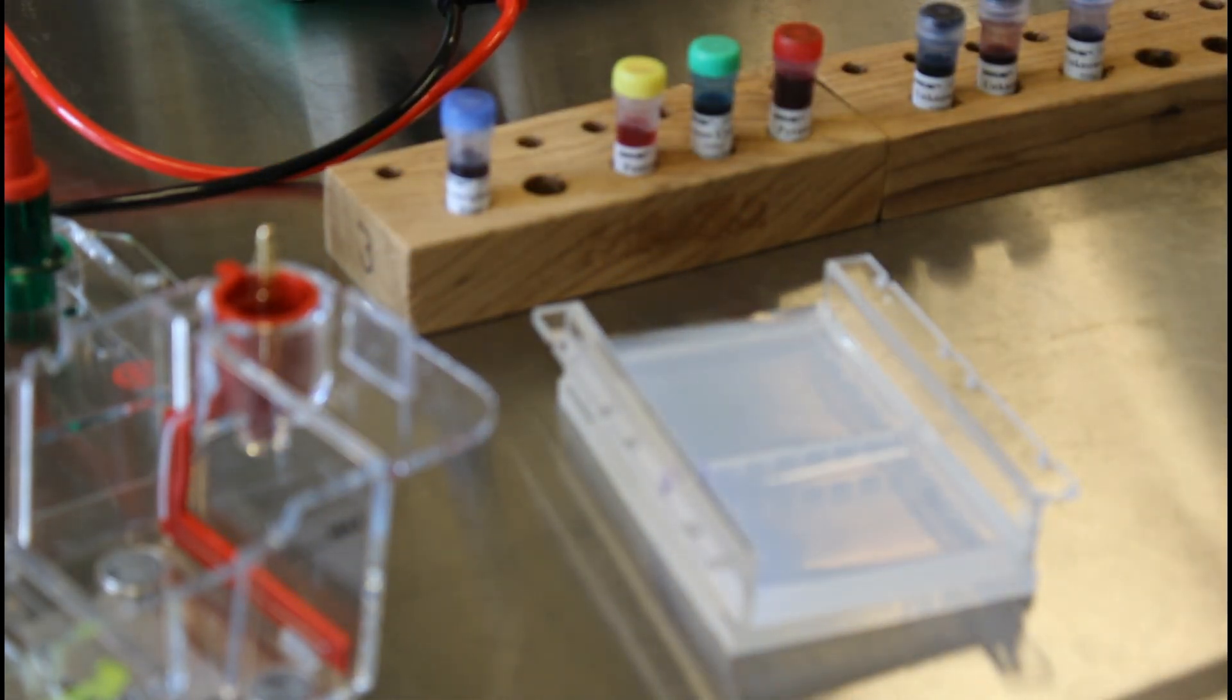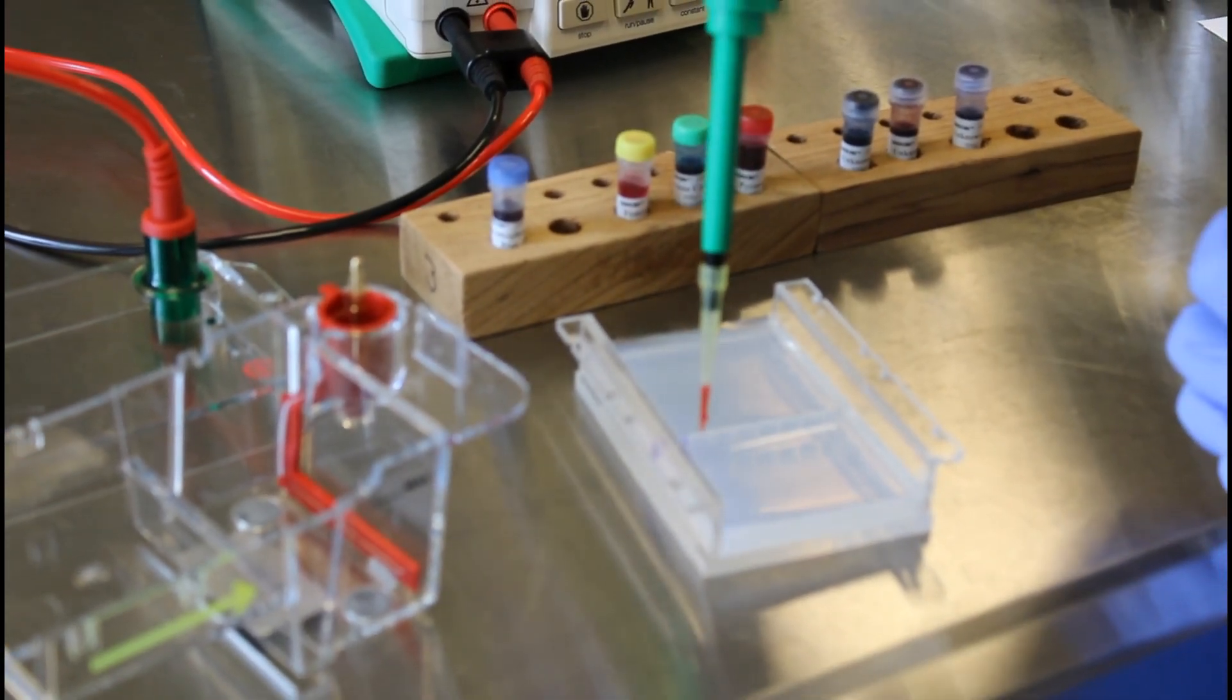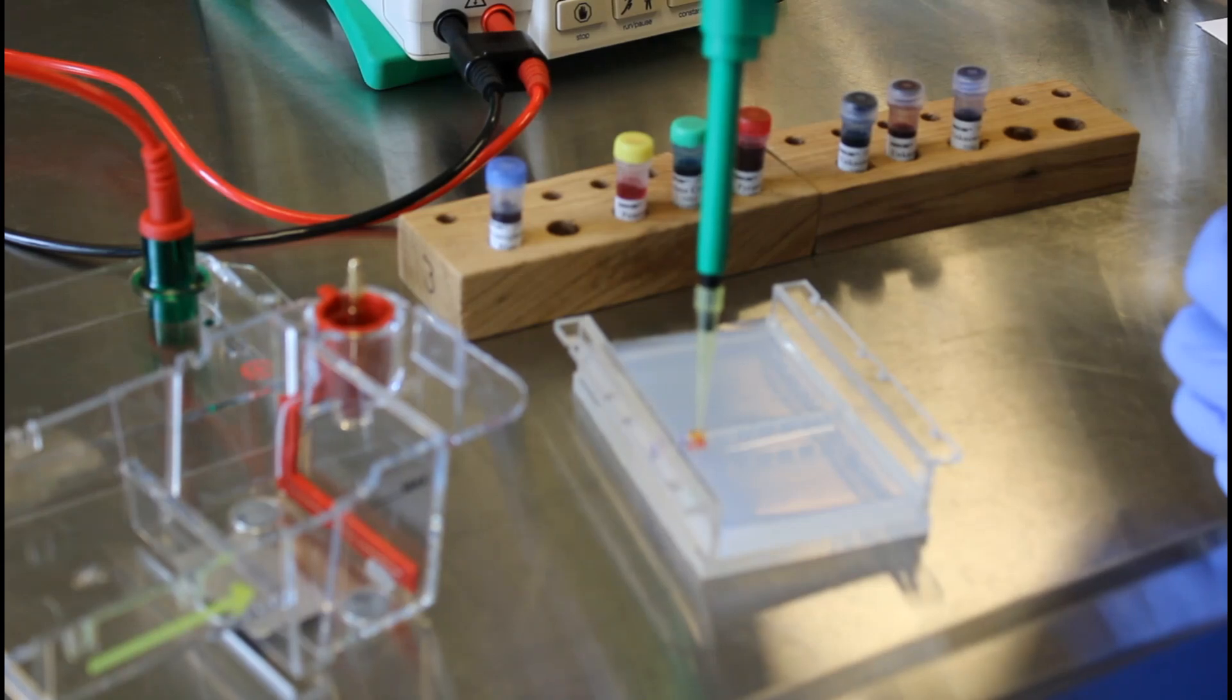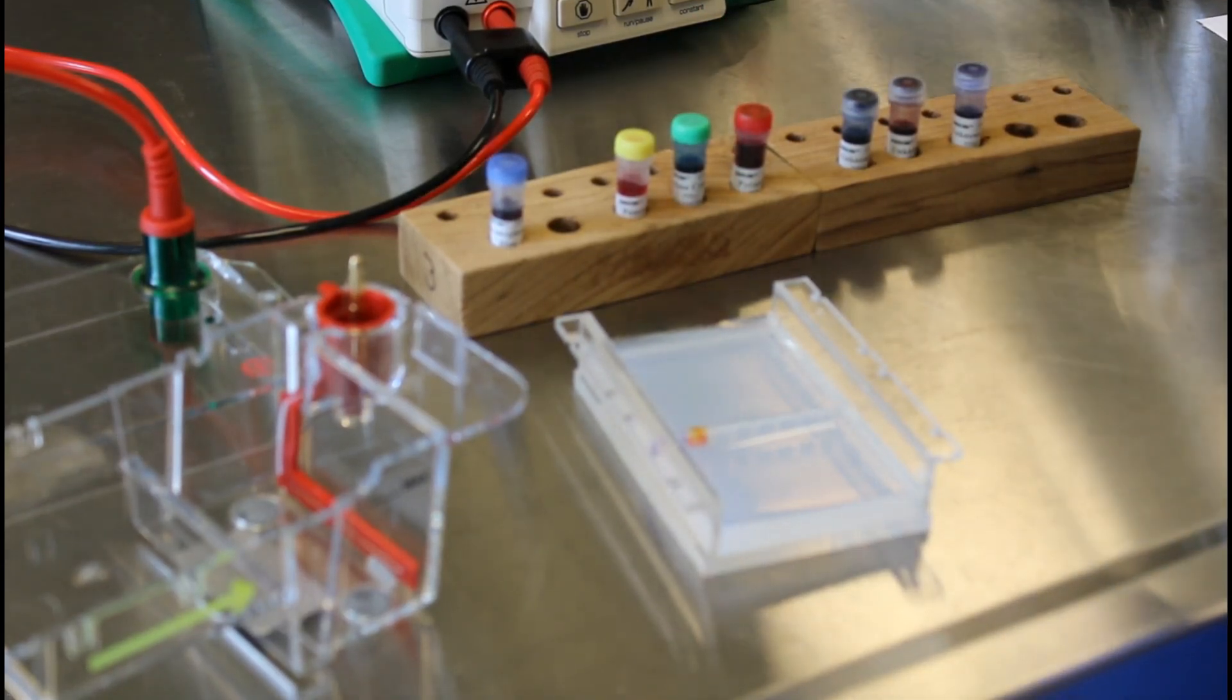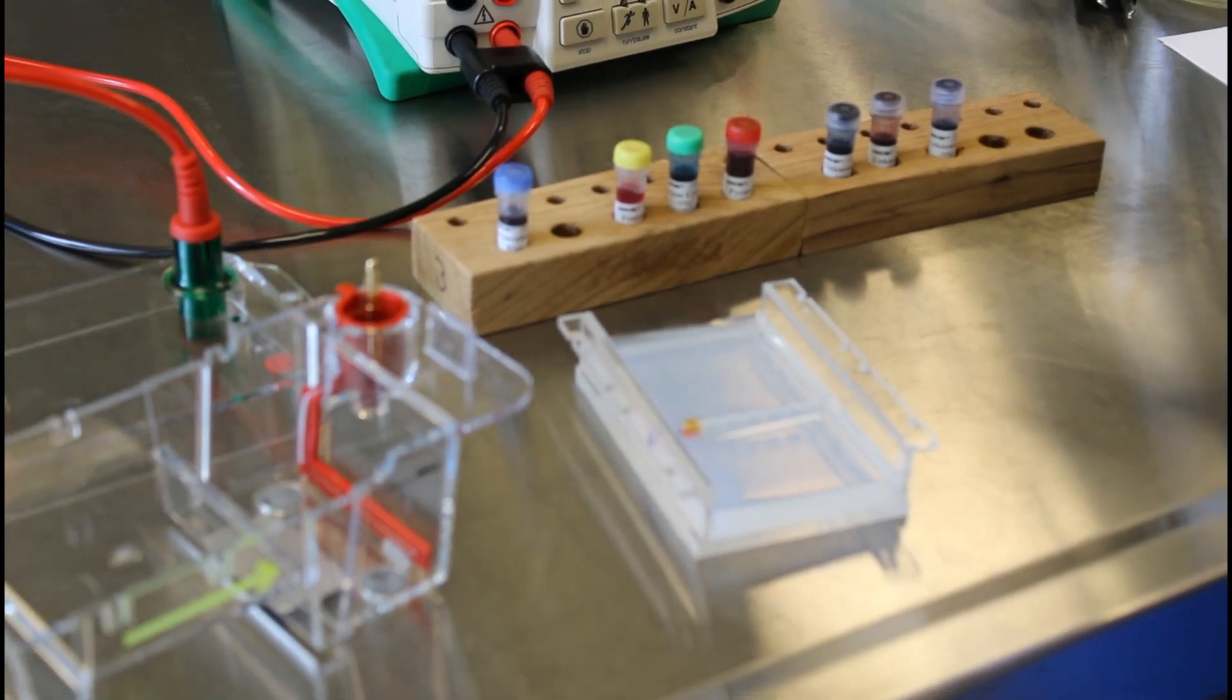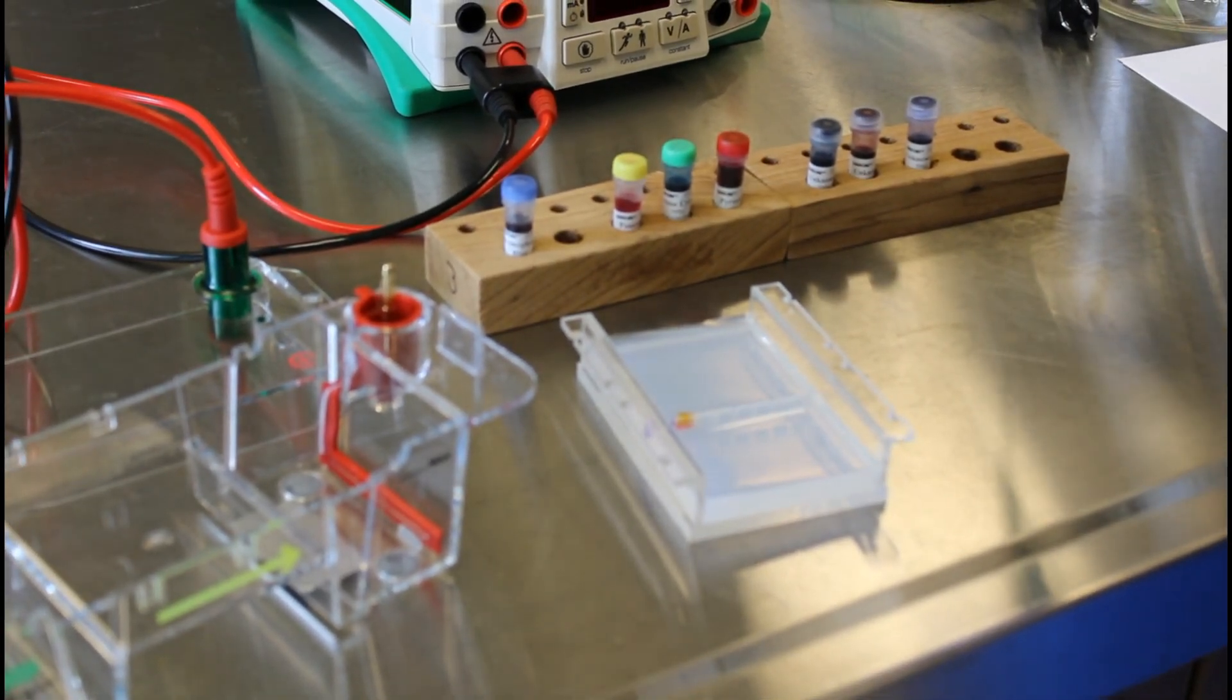In the next well I'm going to grab a new tip and put this methyl orange dye. Once again 20 microliters. It's kind of difficult to make sure you get it in the well. I spilled a little bit on that one. Hopefully it doesn't screw things up.